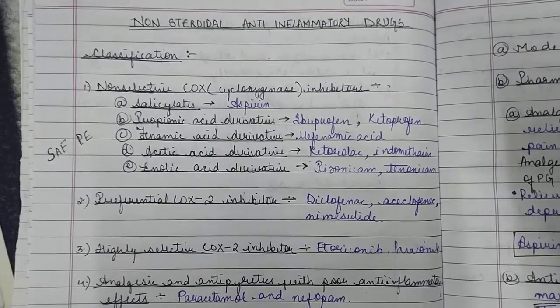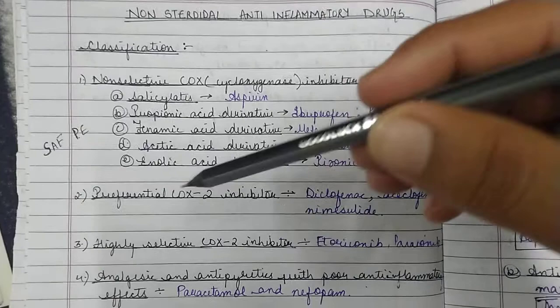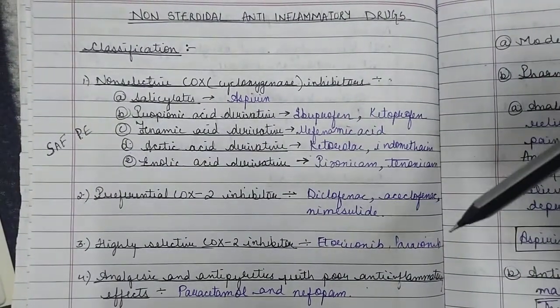Now talking about COX inhibitors, what are COX-1 and COX-2. Firstly, you just read the classification. Thirdly, highly selective COX-2 inhibitors are etoricoxib and parecoxib.